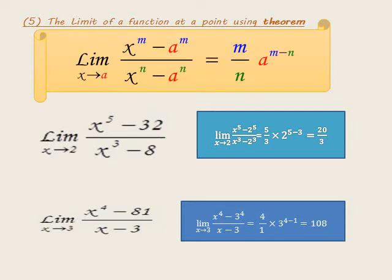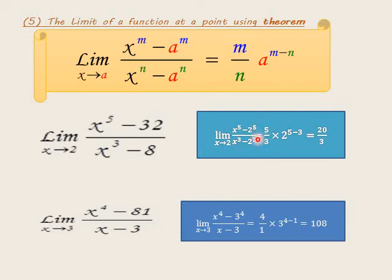Example: limit as x approaches 2 of (x⁵ minus 32) over (x³ minus 8). In the numerator, the power is 5 and 32 equals 2⁵. In the denominator, the power is 3 and 8 equals 2³. We notice x approaches 2, same base 2 in numerator and denominator. Power in numerator m equals 5, power in denominator n equals 3. The value of the limit is (5 over 3) times 2^(5 minus 3) equals (5 over 3) times 4 equals 20 over 3.